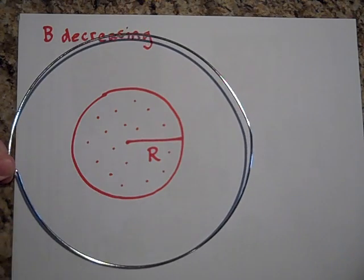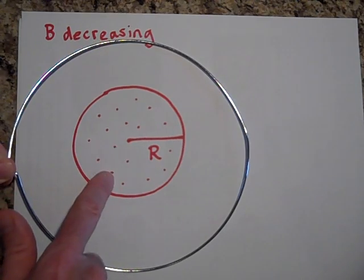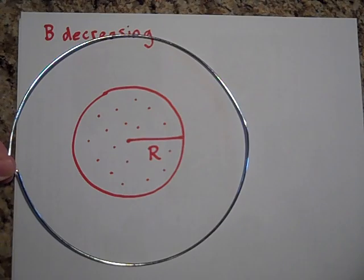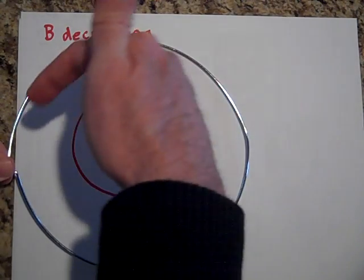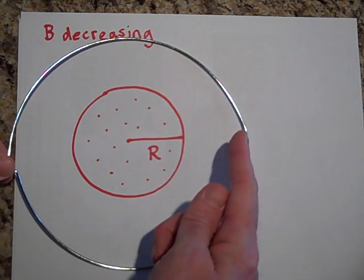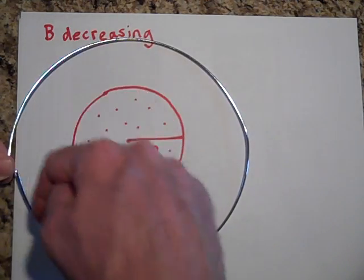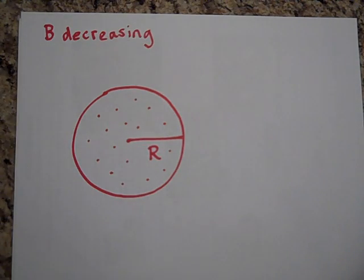Which way will the current go? If the dots are decreasing, then it's going to want to keep the status quo, so it's going to want to make dots. To make dots, the current will go around like this. So that's also the way of the electric field. But get rid of this. There is no current because you need a wire for current to flow in.